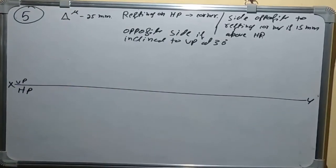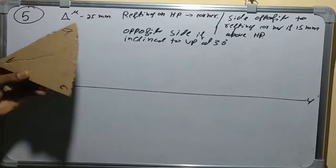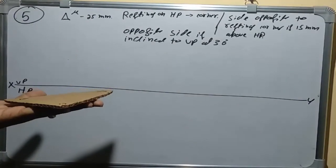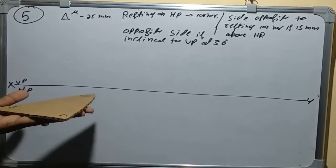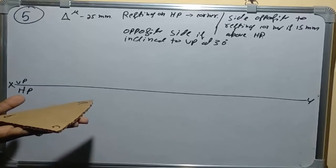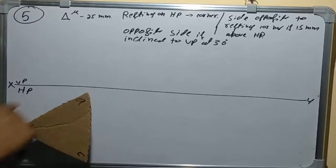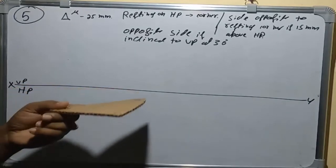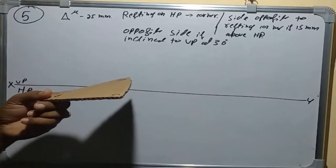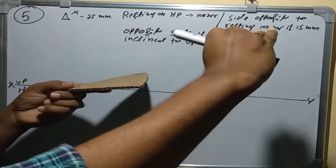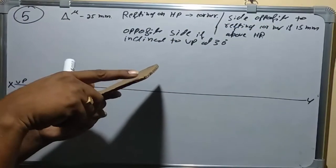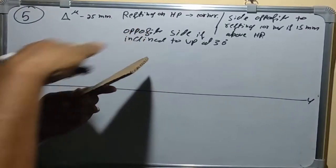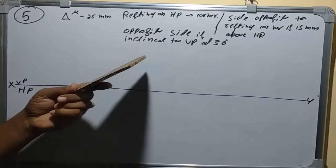Using the plane surface explanation: the triangular lamina of 25 mm sides is resting on HP on one corner, which we keep on the left side. From the top view, we get a triangle with the corner on the left. The front view appears as a straight line. In the second step, since the side opposite the resting corner must be 15 mm above HP, we draw a 15 mm locus line and keep lifting that side until it touches the locus line, then stop.